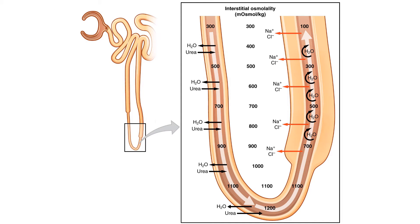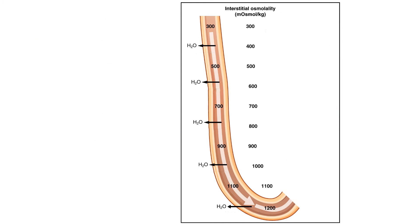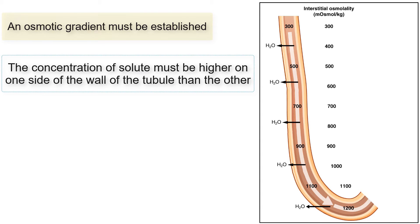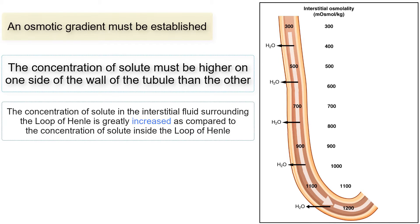In order for water to be moved out of the filtrate and into the interstitial fluid, an osmotic gradient must be established. In order to establish an osmotic gradient, the concentration of solute must be higher on one side of the wall of the tubule than the other. In the case of the countercurrent multiplier system, the concentration of solute in the interstitial fluid surrounding the loop of Henle is greatly increased compared to the concentration of solute inside the loop of Henle. This establishes an osmotic gradient.